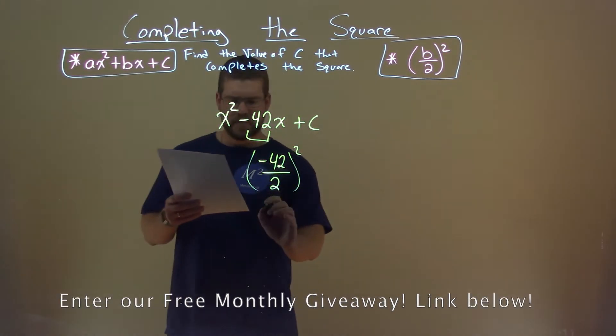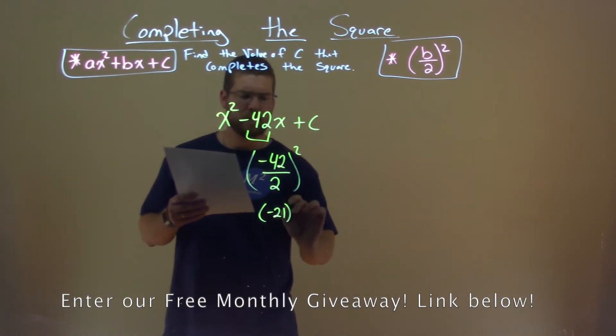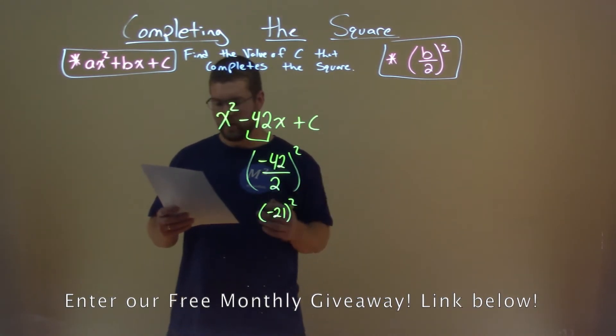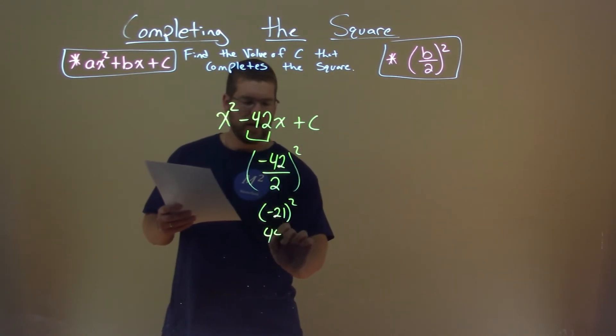Well, negative 42 divided by 2 is then negative 21. Squaring negative 21 will become a positive number, and 21 squared is 441.